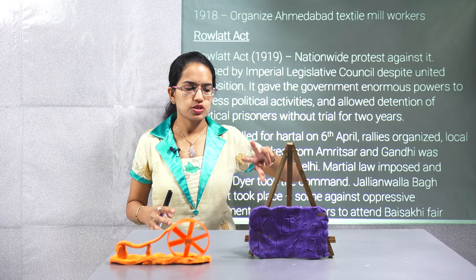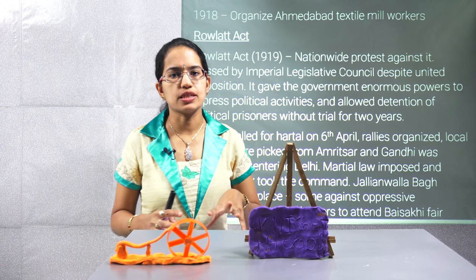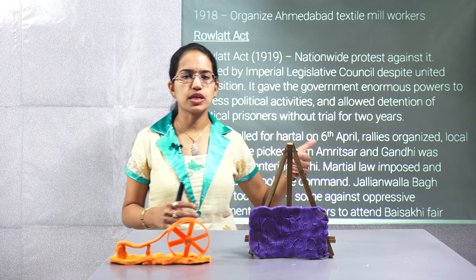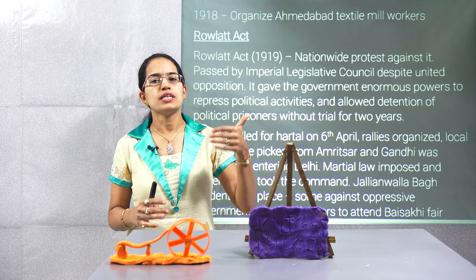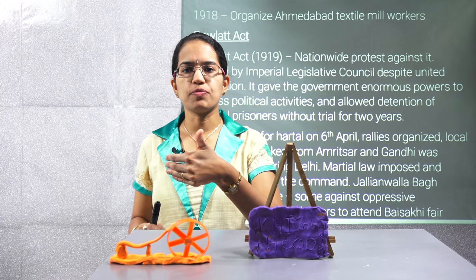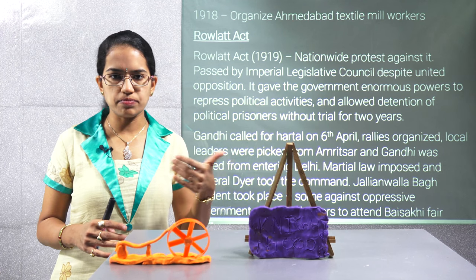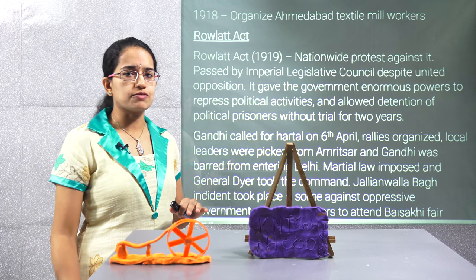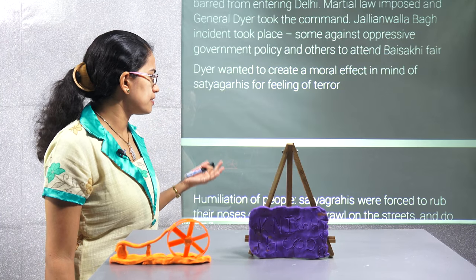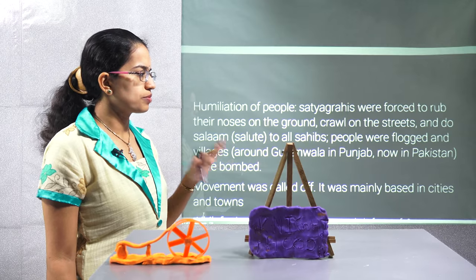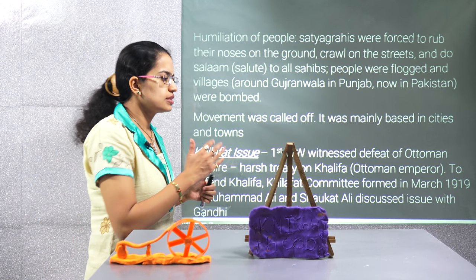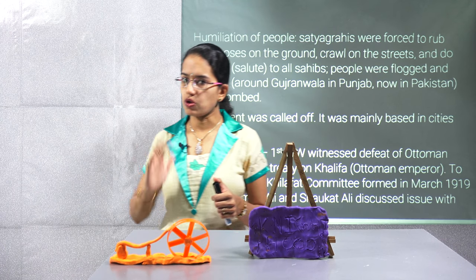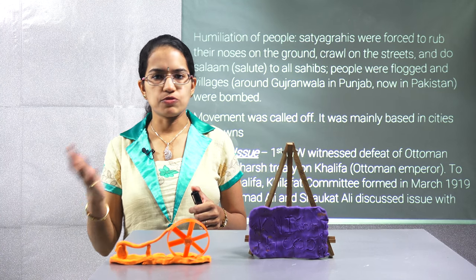In Jallianwala Bagh, there were two kinds of people present — one group was protesting against government atrocities and rules, and the second were those there to attend the Baisakhi fair. After the cruelty that was witnessed, Gandhiji believed that this movement should be called off because it was turning violent, and he would work around non-violence. So that movement was called off.